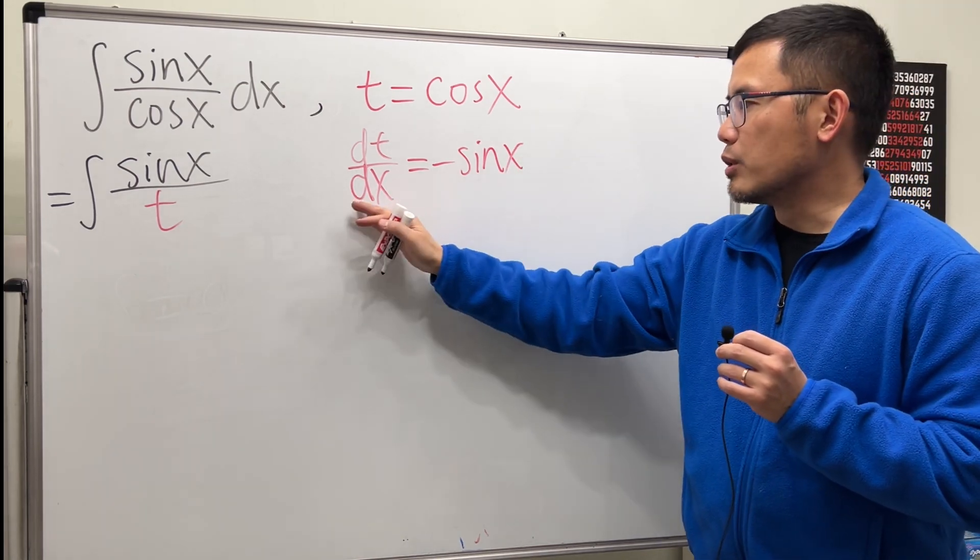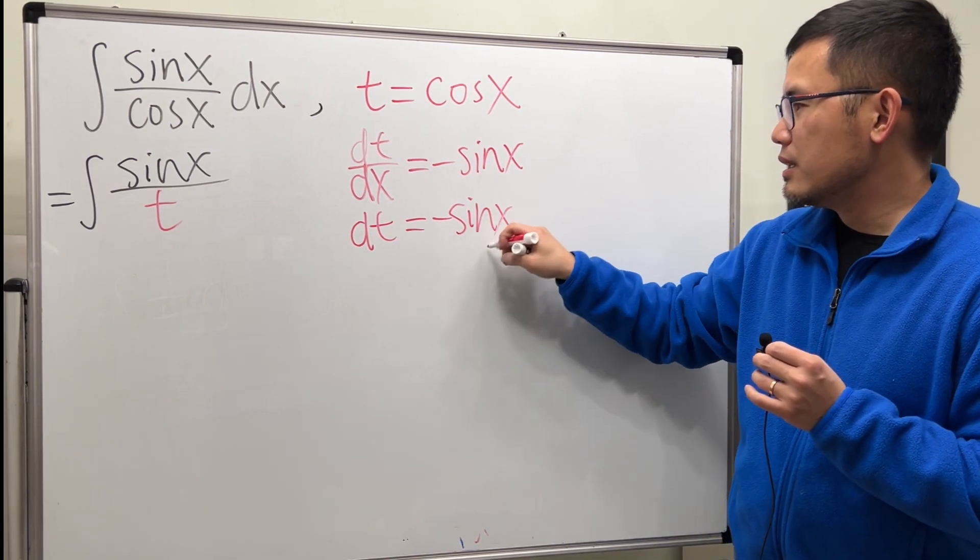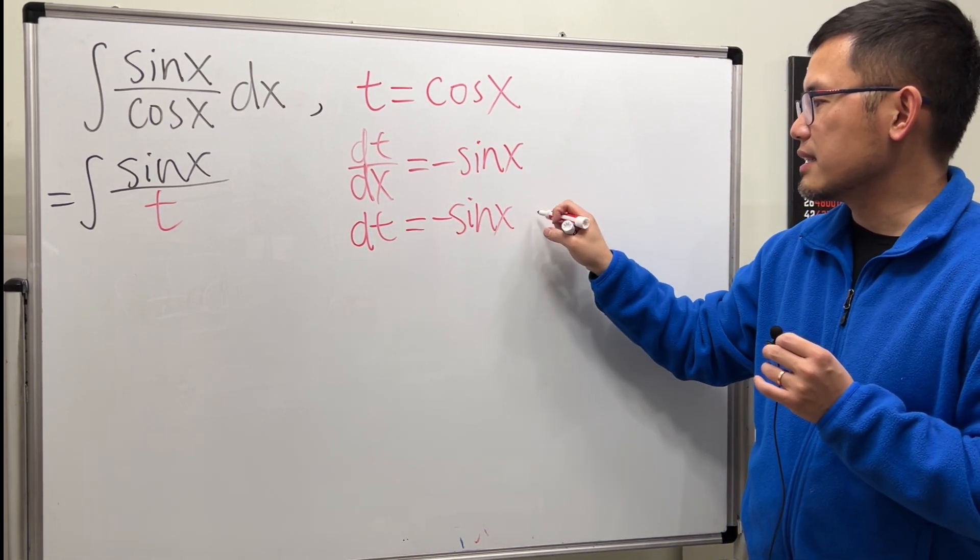From here, let's multiply the dx on both sides. This is just like doing the differential. So, dt equals negative sin x dx.